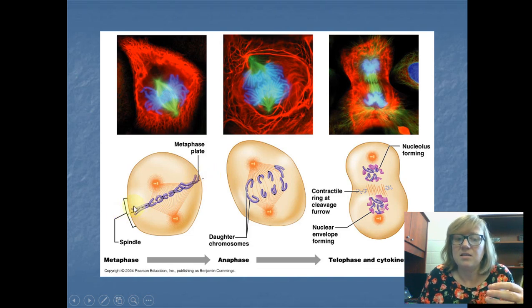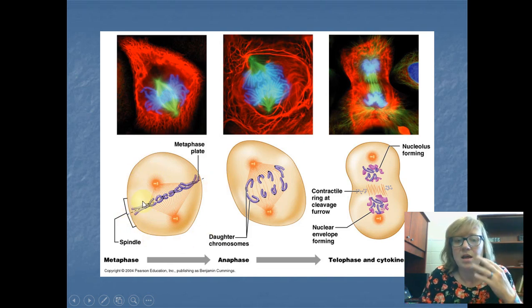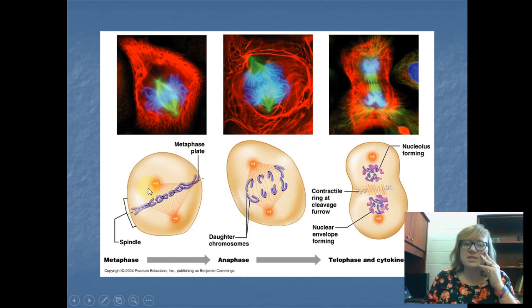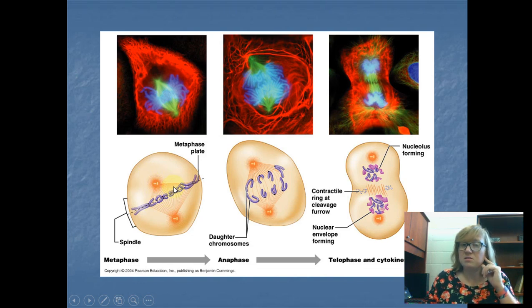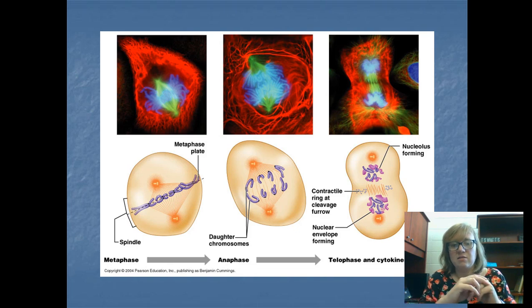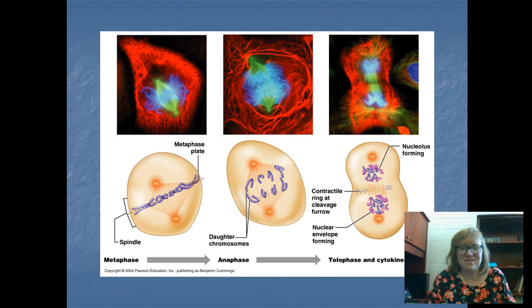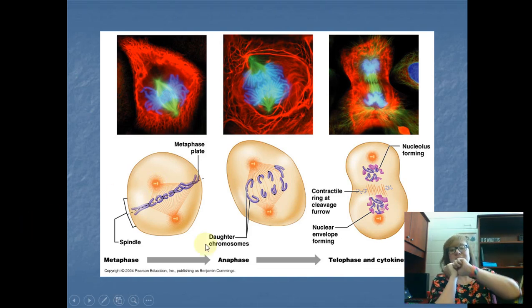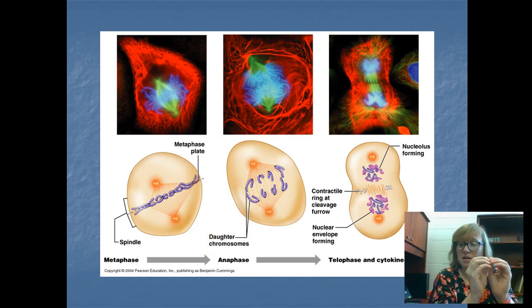Remember in our cell talk, we talked about the centrioles — those little pieces of pasta. They're activating and moving and forming what we call spindle fibers. These spindle fibers connect to the middle of the chromosome. Think of the centrioles like fishermen sending out a spindle — that's like the fishing line — and they hook to the middle of this chromosome pair.